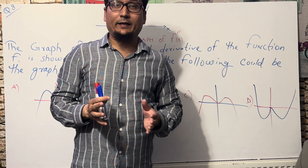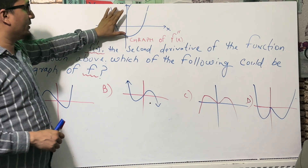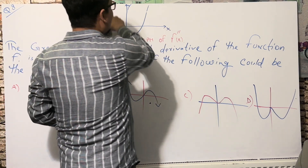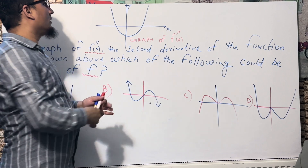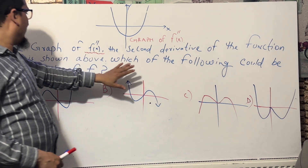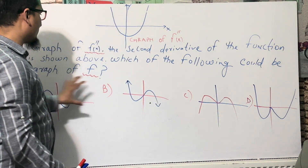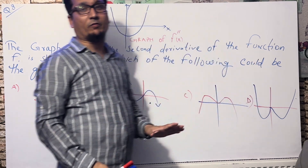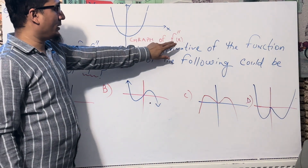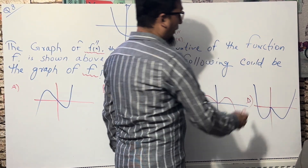The question gives us a graph, but this is the graph of the second derivative - not the graph of the first derivative or the function itself. The graph of the second derivative is given, and there are four options showing functions F(x). The question asks: which of the following could be the graph of F, if this is its double derivative?